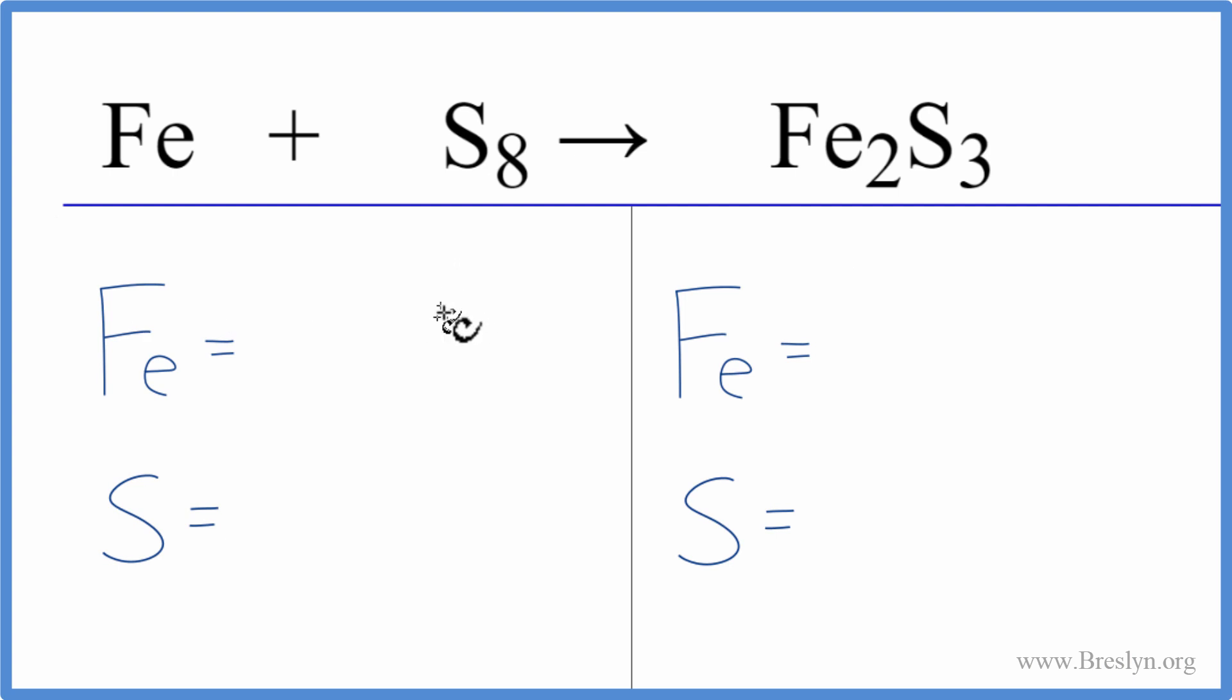Let's count the atoms up on each side and then balance the equation. We have one iron atom and eight sulfur atoms. On the product side, we have two irons and three sulfurs. Let's leave the iron till last. It's all by itself, so we'll put a coefficient in front of that when we're done. This sulfur is challenging.